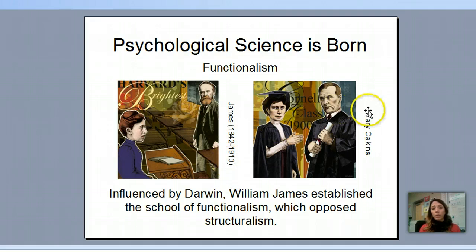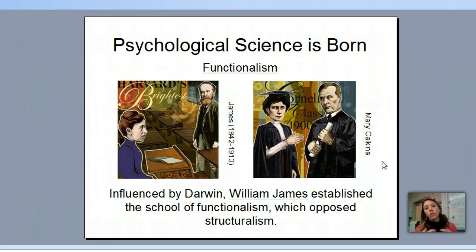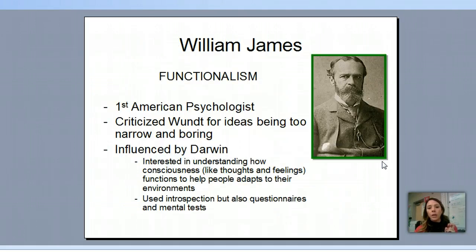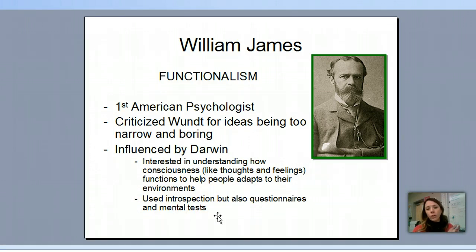Someone that James worked with was Mary Calkins — she sometimes appears on the AP test. You should know she worked with James; they're usually mentioned together, and it's usually about what type of psychology they studied. William James: functionalism, first American psychologist, influenced by Darwin. He also used introspection but also used things like mental tests and questionnaires — some more empirical, scientific data.